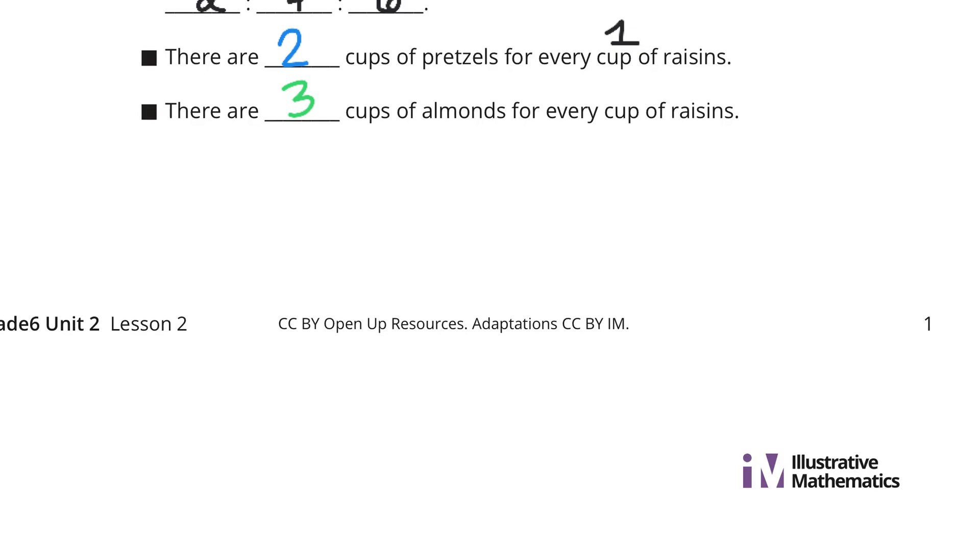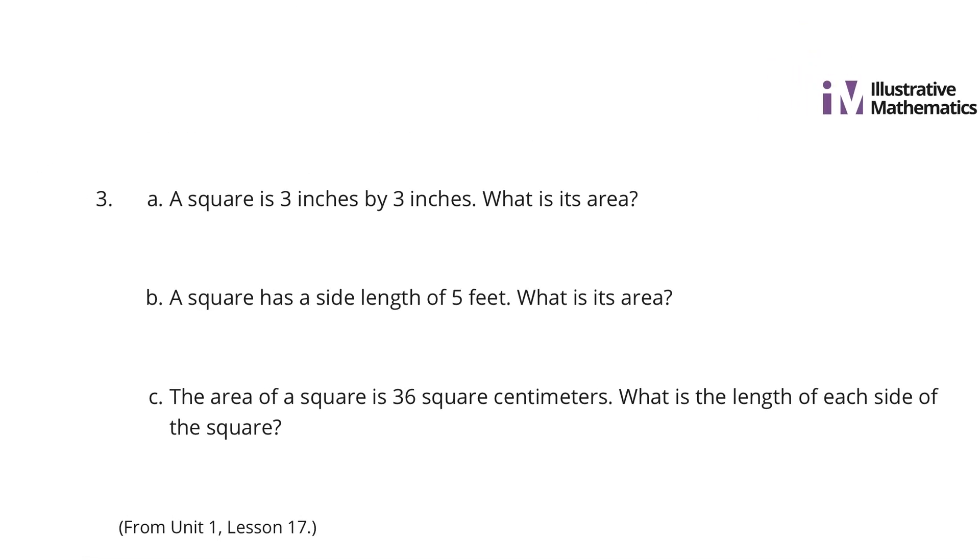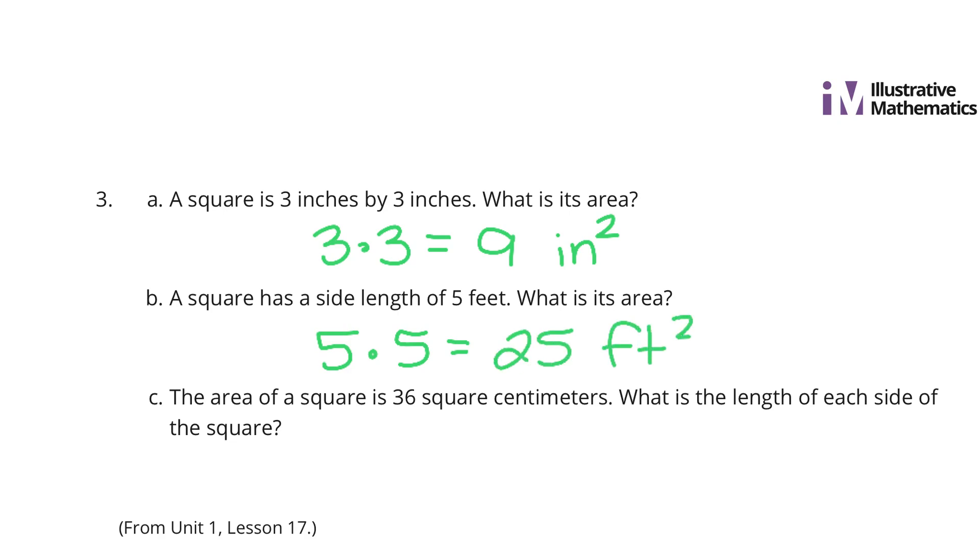A square is 3 inches by 3 inches. What is its area? Well, 3 times 3 will get me 9 square inches. A square has a side length of 5 feet. What is its area? Well, 5 times 5 will get me 25 square feet. And lastly, the area of a square is 36 centimeters. What is the length of each side of the square? Well, something times something is going to be 36 and that something has to be the same number. And so, 6 times 6 is equal to 36 square centimeters. And so, our solution here is 6 centimeters.